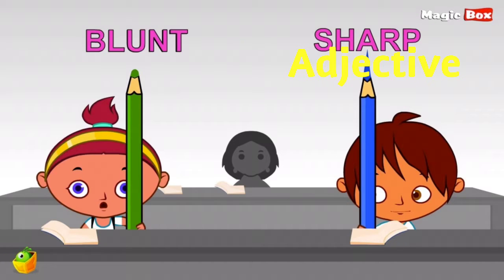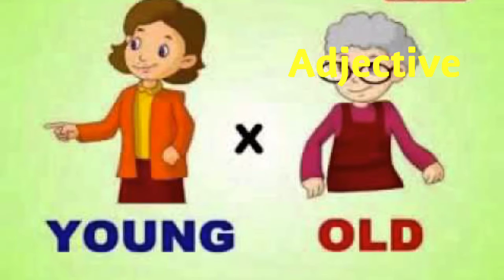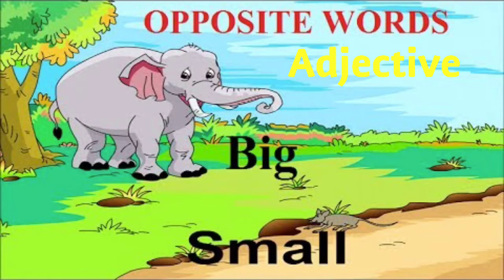Tell the next child to bring a stone. The child would bring a stone. You say that I don't want this stone. If the child had brought a big stone, tell the child that I want a small stone. If the child had brought a small stone, tell that I want a big stone.